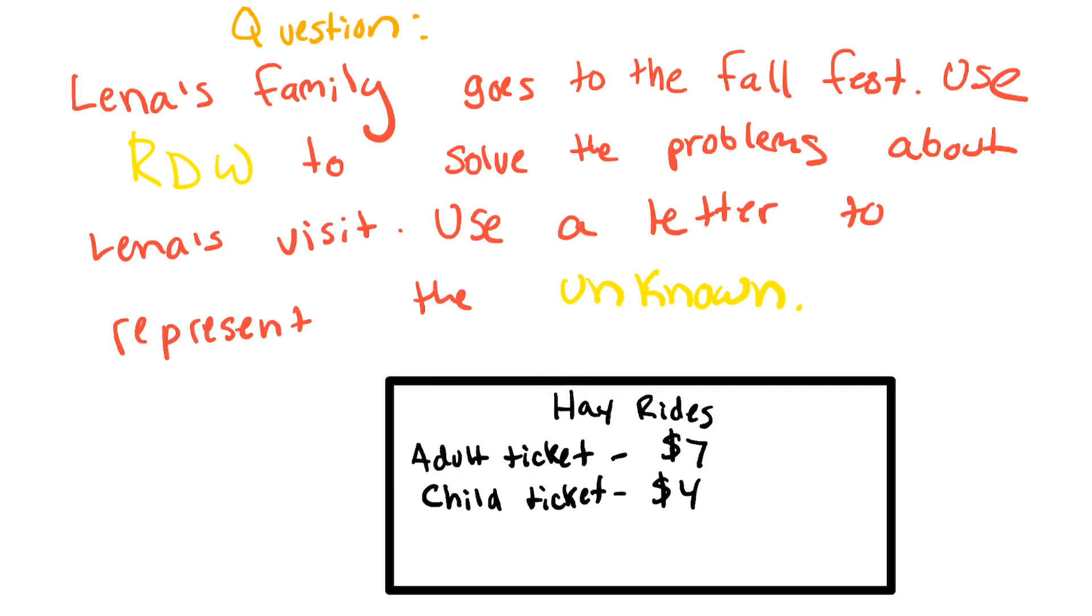So here's the question. Lena's family goes to the Fall Fest. Use RDW. What's RDW? Read, draw, write to solve the problems about Lena's visit. Use a letter to represent the unknown. What we don't know, we're going to use a letter. So right here is a graph with some important information. A key, I should say, with some important information for the Fall Fest. So the Hayrides, one adult ticket is $7. And a child ticket is $4. So we're going to need that information for solving the next two questions.